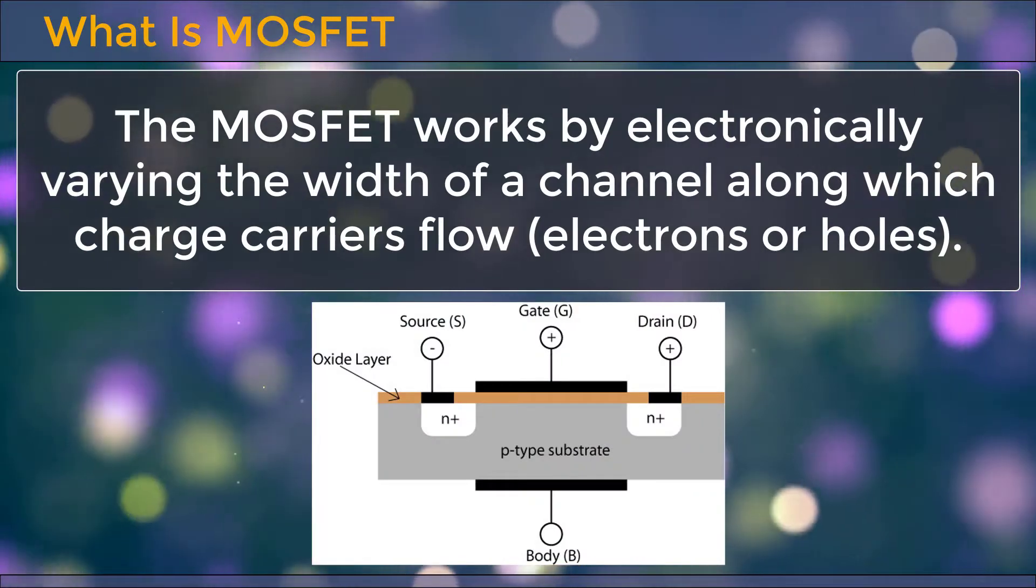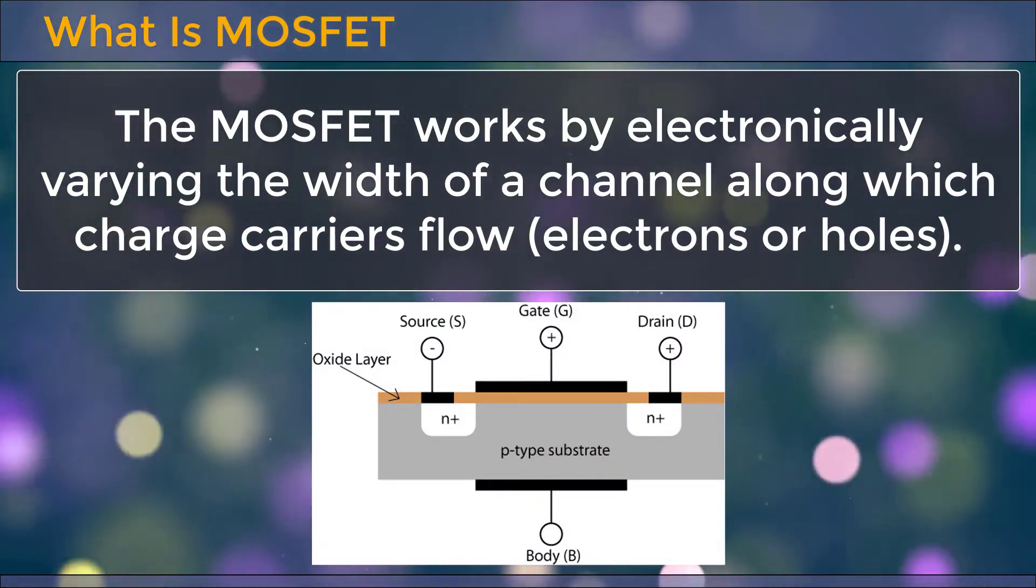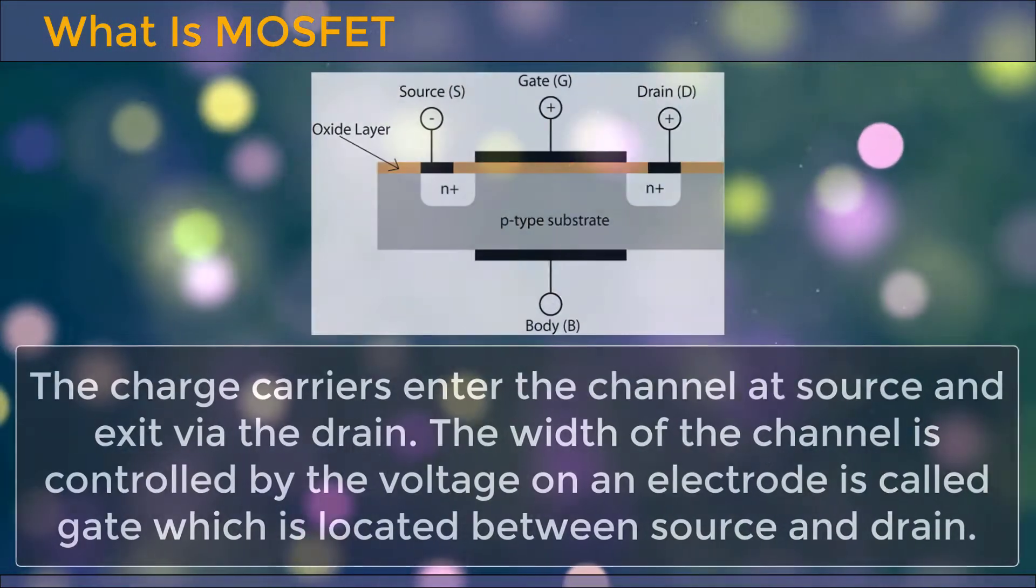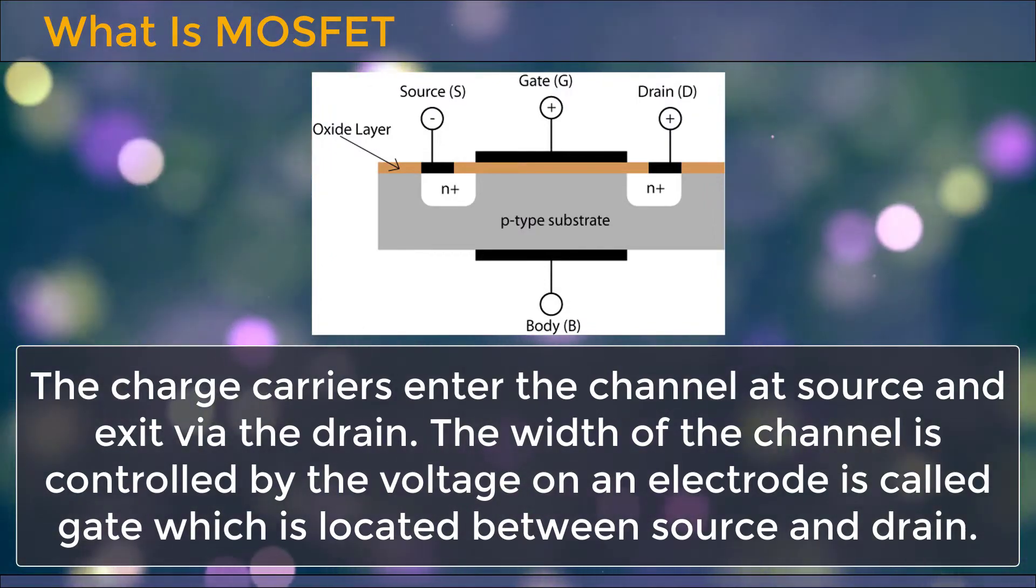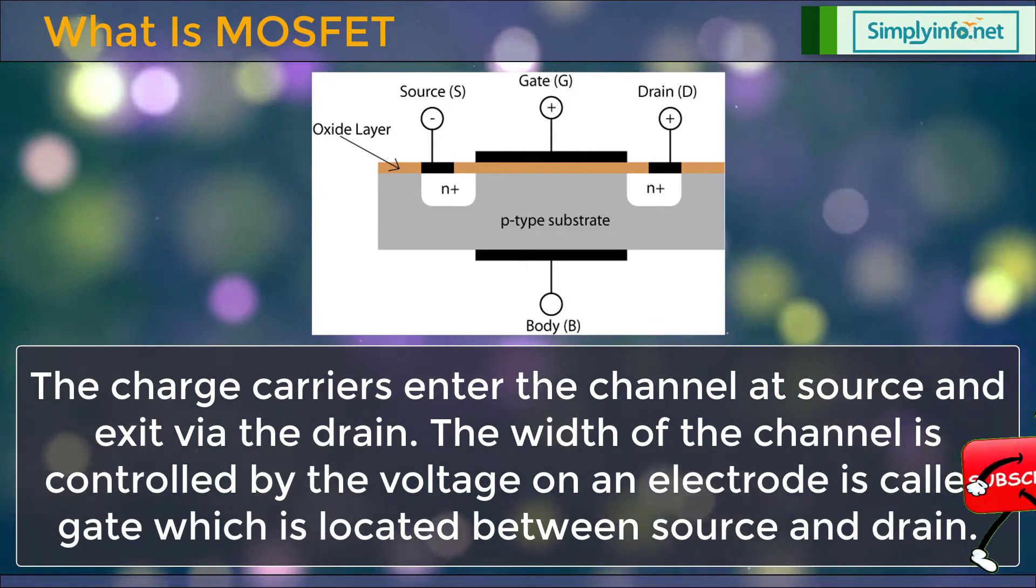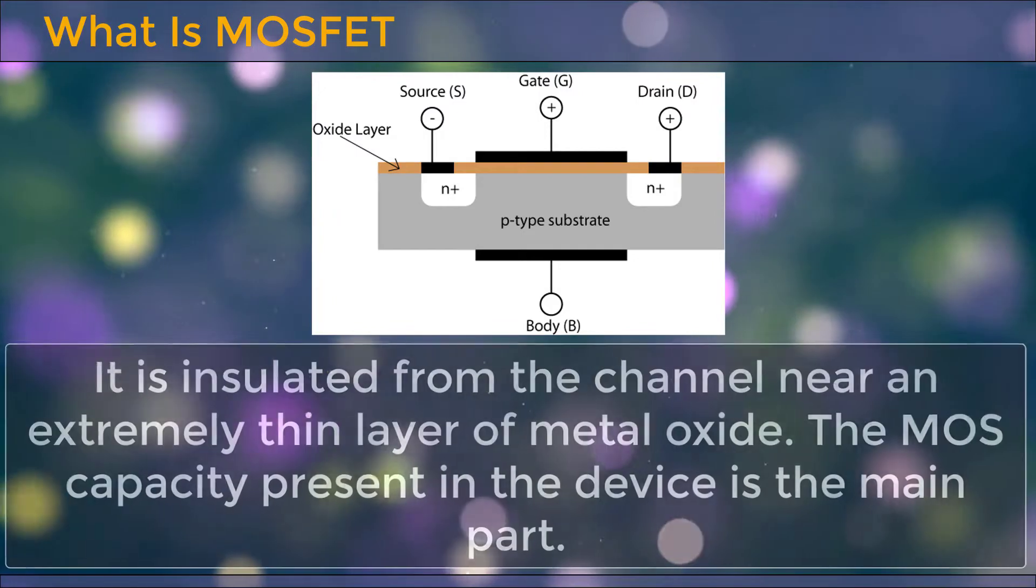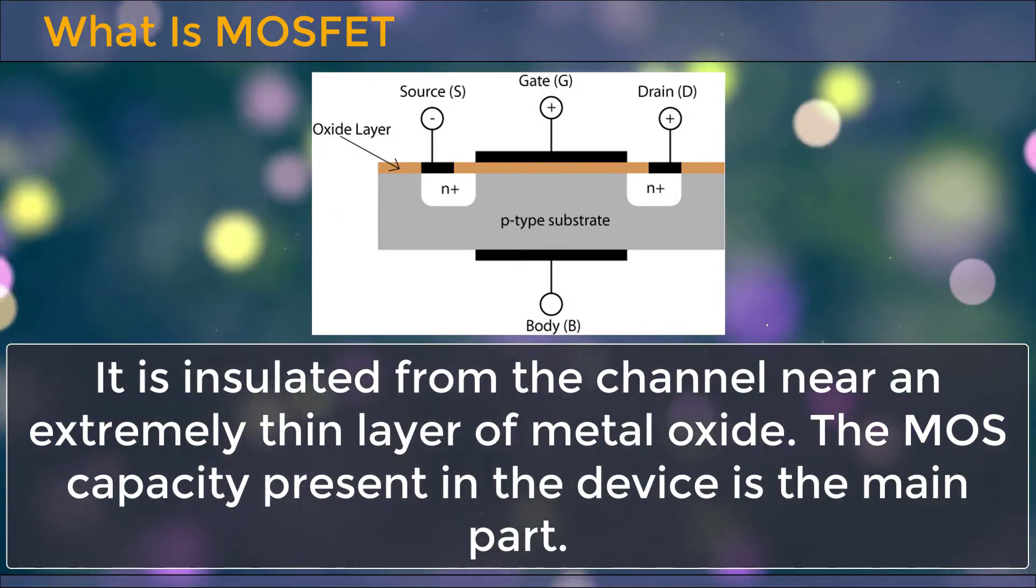The MOSFET works by electronically varying the width of a channel along which charge carriers flow. The charge carriers enter the channel at source and exit via the drain. The width of the channel is controlled by the voltage on an electrode called gate, which is located between source and drain. It is insulated from the channel near an extremely thin layer of metal oxide.